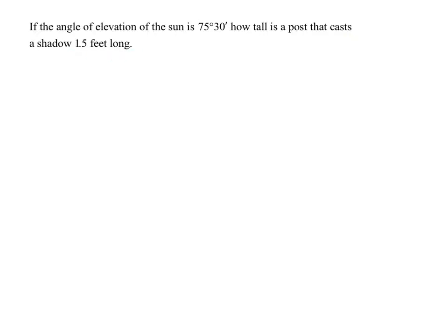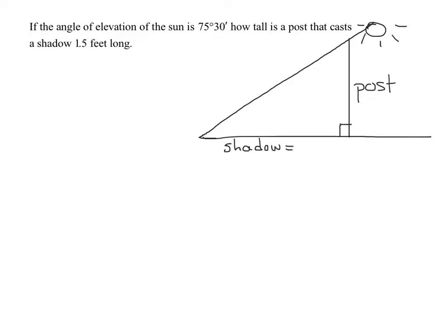In these problems we assume our post is vertical and our ground is horizontal. So I have the sun and it's casting a shadow. Here is my post, here's my sun up here, and it's casting a shadow down here. My shadow is 1.5 feet long.